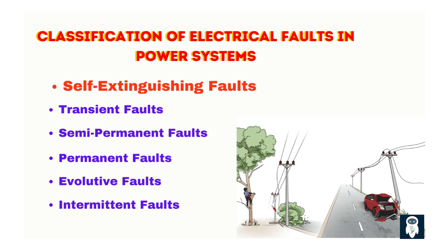Self-extinguishing faults are temporary by nature and naturally dissipate without intervention, typically within less than 100 milliseconds. They do not require the operation of protective devices or system resets. These faults are caused by transient external conditions, cause minimal or no damage to power system infrastructure, and are automatically cleared due to system stability or environmental factors. An example is wind-blown debris momentarily bridging conductors but removed by natural forces like gravity or wind.